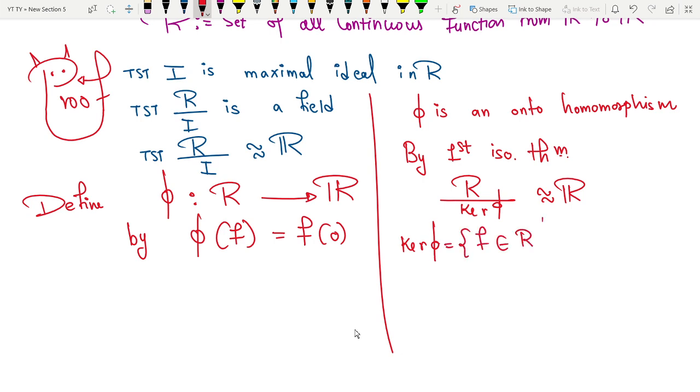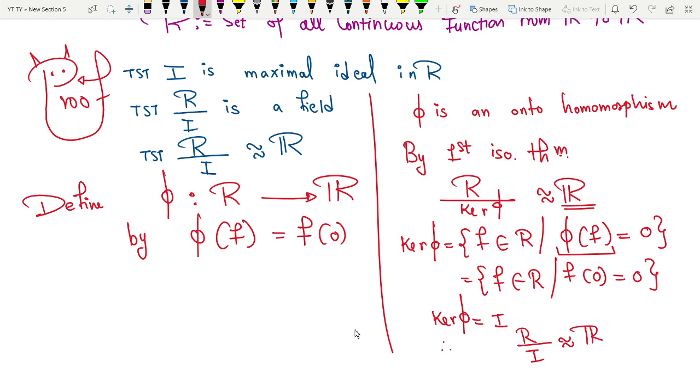of all f in R such that φ(f) should be zero, the zero of real numbers. So that is the same as f in R such that φ(f) = f(0) = 0, which is actually the same as I. Yes or no? Right. So therefore I conclude R/I is isomorphic to the set of all real numbers, which is a field.